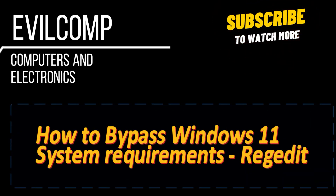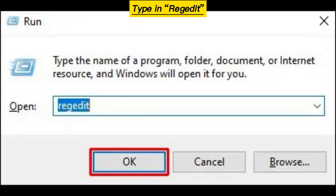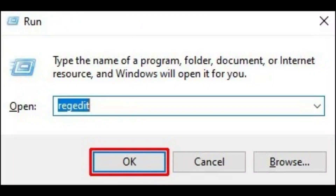How to bypass Windows 11 system requirements in Regedit. Press Windows plus R keys, type in Regedit, and click OK.